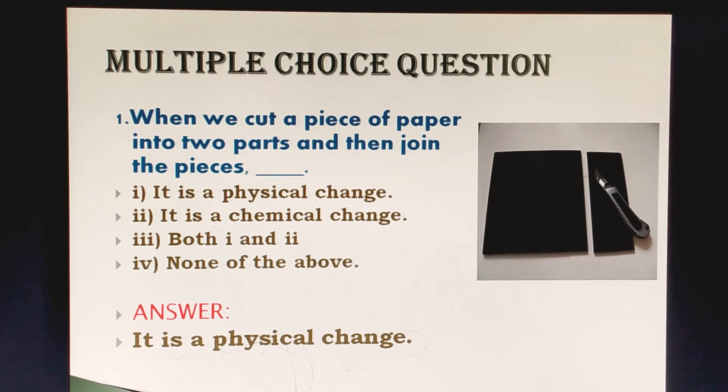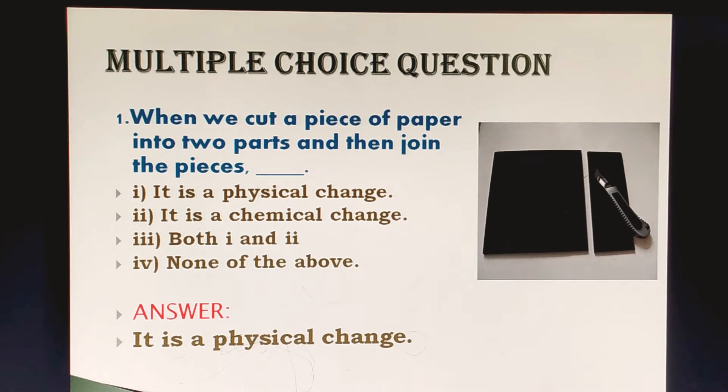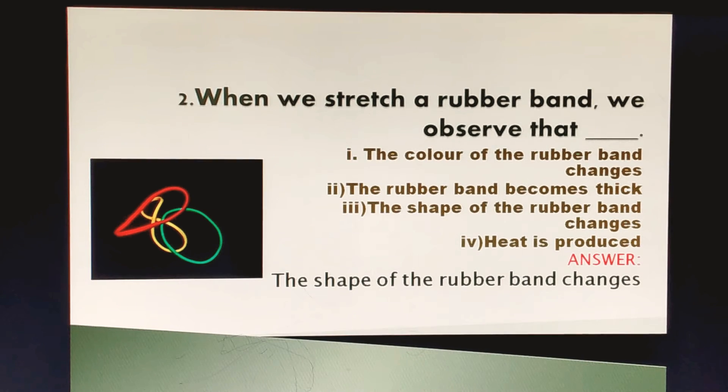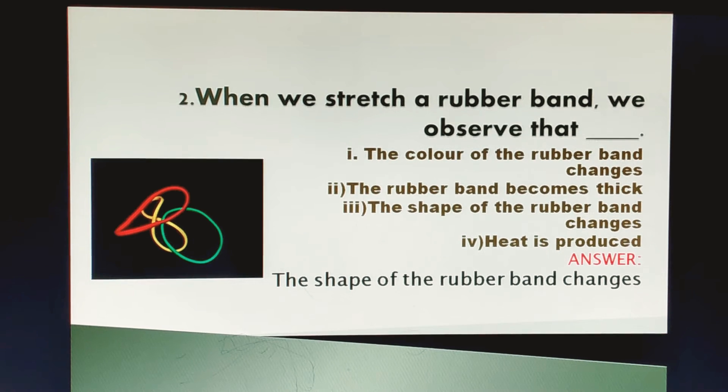When we cut a piece of paper into two parts and then join the pieces, what is it? There are four options. My answer will be it is a physical change.